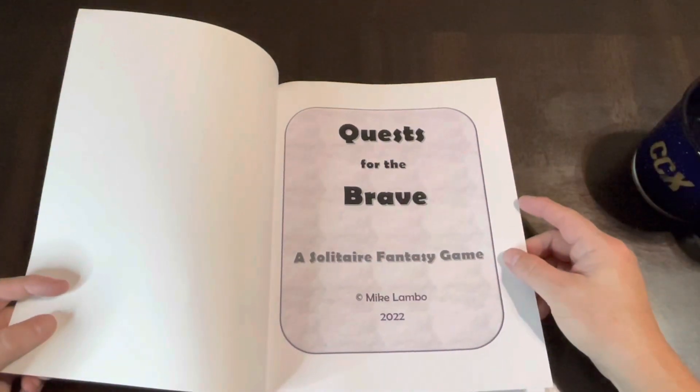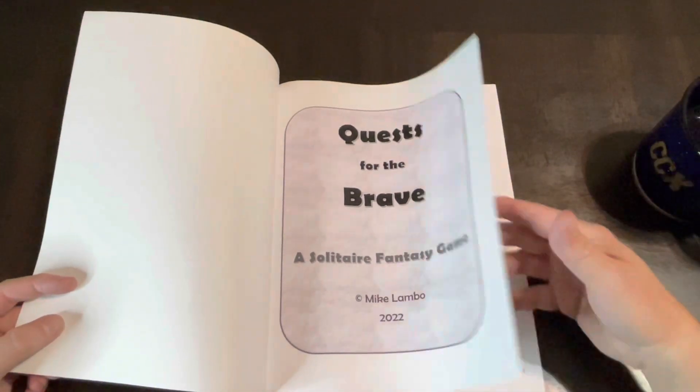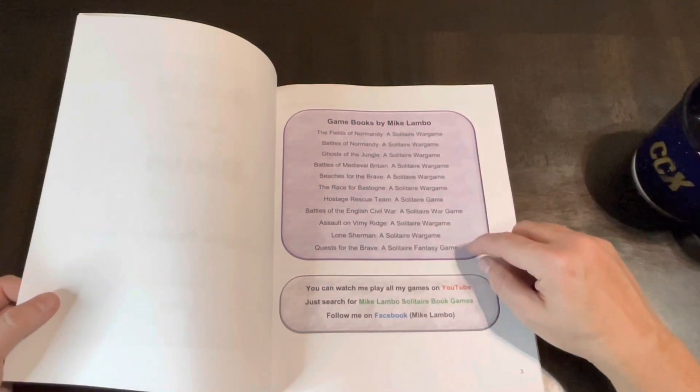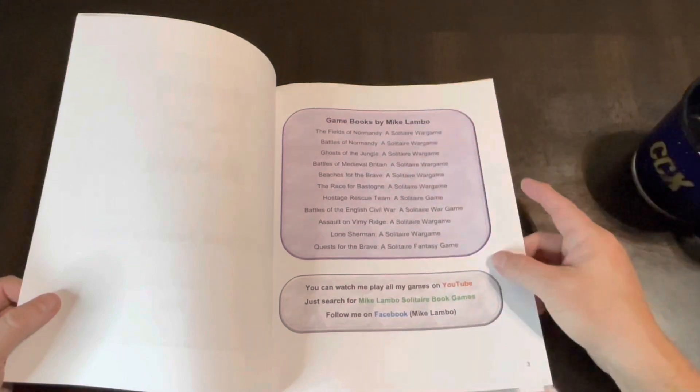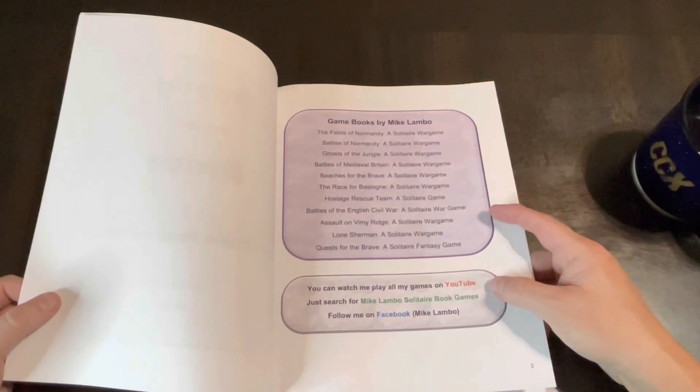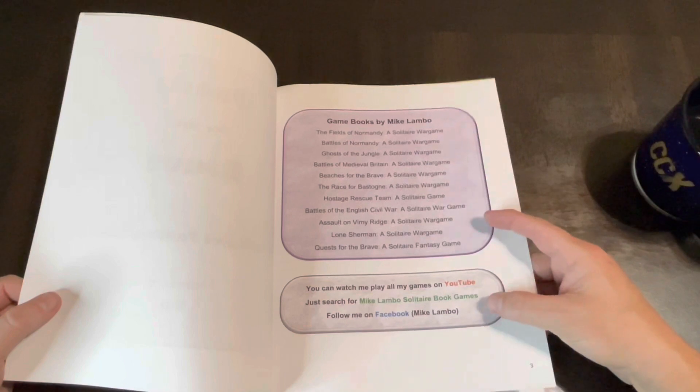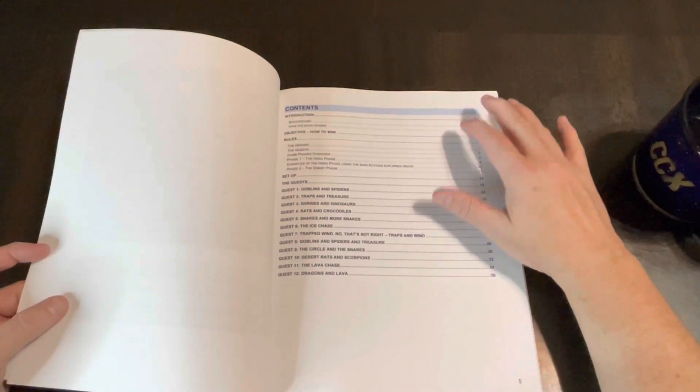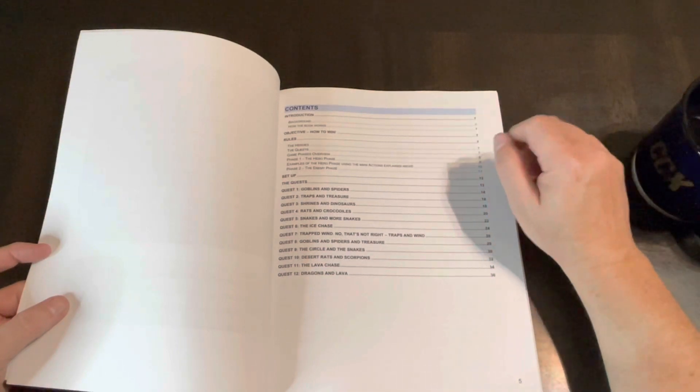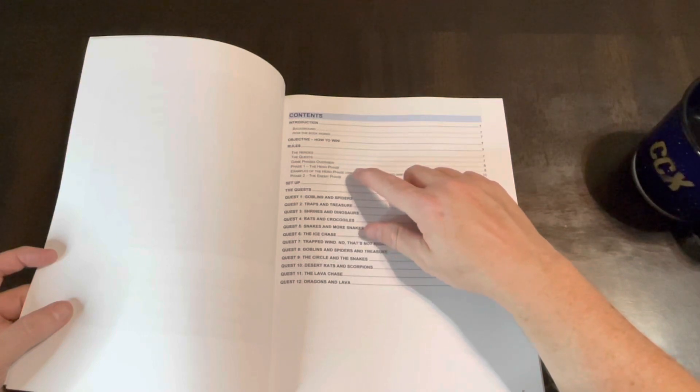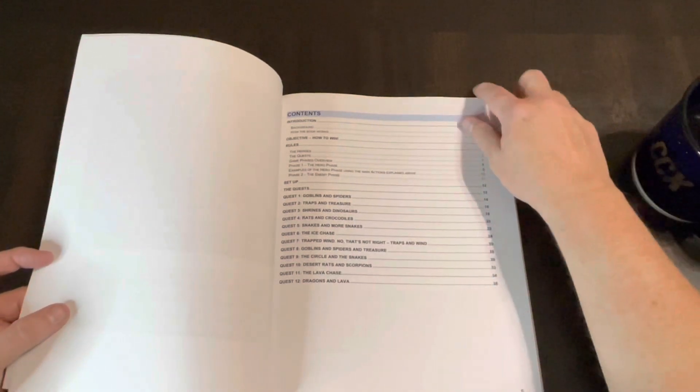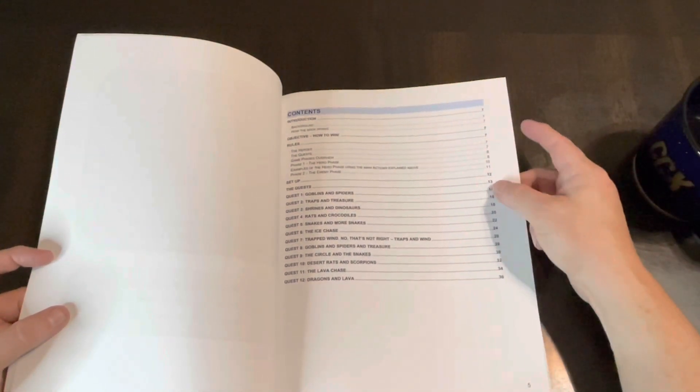Quest for the Brave, a solitaire fantasy game, Mike Lambo. Here's a list of all his other books which I think I have all of them, and you can watch him play them on YouTube if you search for it or follow him on Facebook. This has an introduction and how the book works, objectives, how to win, the rules which are the heroes, the quests, game phases. Phase one, the hero phase, examples of hero phase, and then phase two is the enemy phase. You've got setup, you've got the quest.